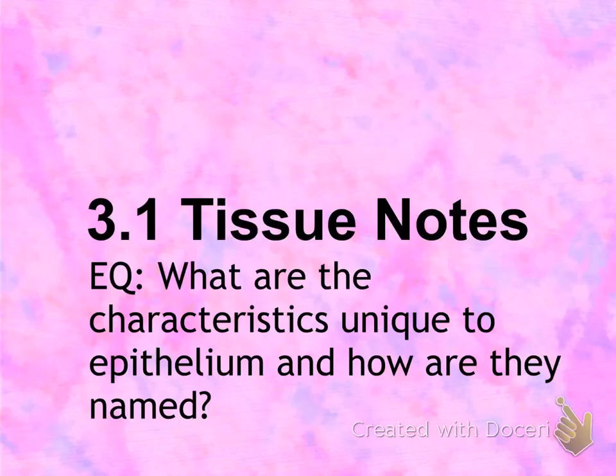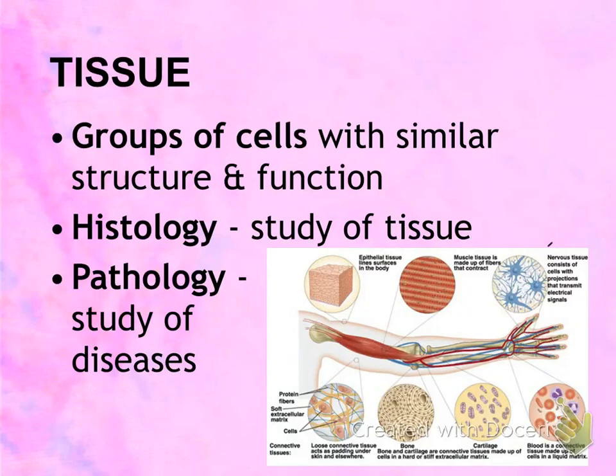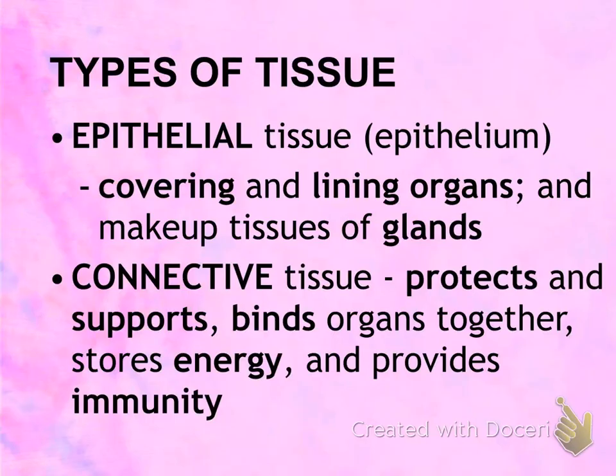This is 3.1 tissue notes. The essential question is: what are the characteristics unique to epithelium and how are they named? Tissue is a group of cells with similar structure and function. Histology is the branch of science that studies tissue. Pathology is the study of diseases.